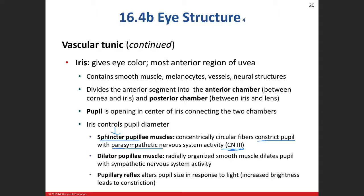The other muscle group is called the dilator pupillae muscle. It does exactly what its name says — it makes the opening of the pupil bigger, and it is operated by the sympathetic nervous system.